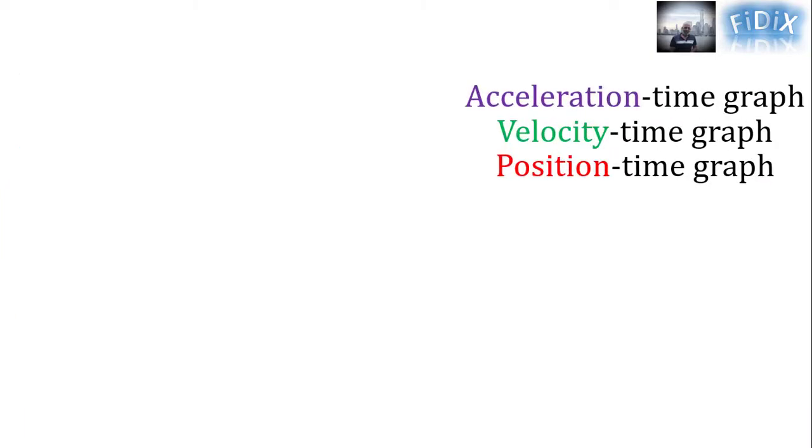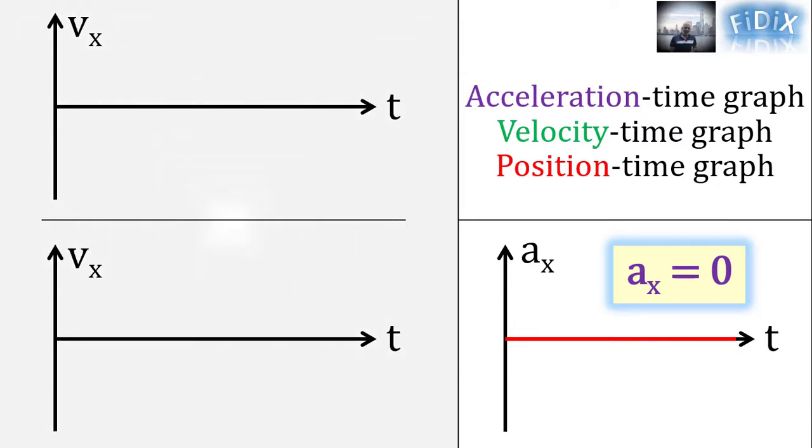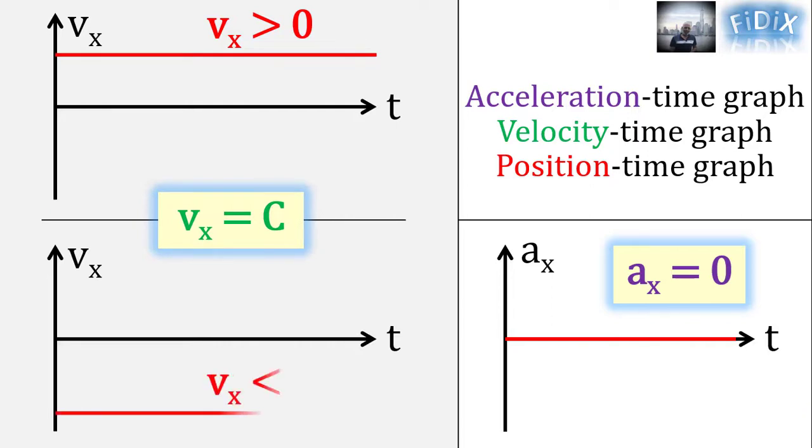This motion can be represented by the acceleration-time graph in which the function Ax equals 0 is a straight line that overlaps the t-axis, and the velocity-time graph in which the function Vx equals constant is a straight line above and parallel to the t-axis when Vx is positive and below and parallel to the t-axis when Vx is negative.